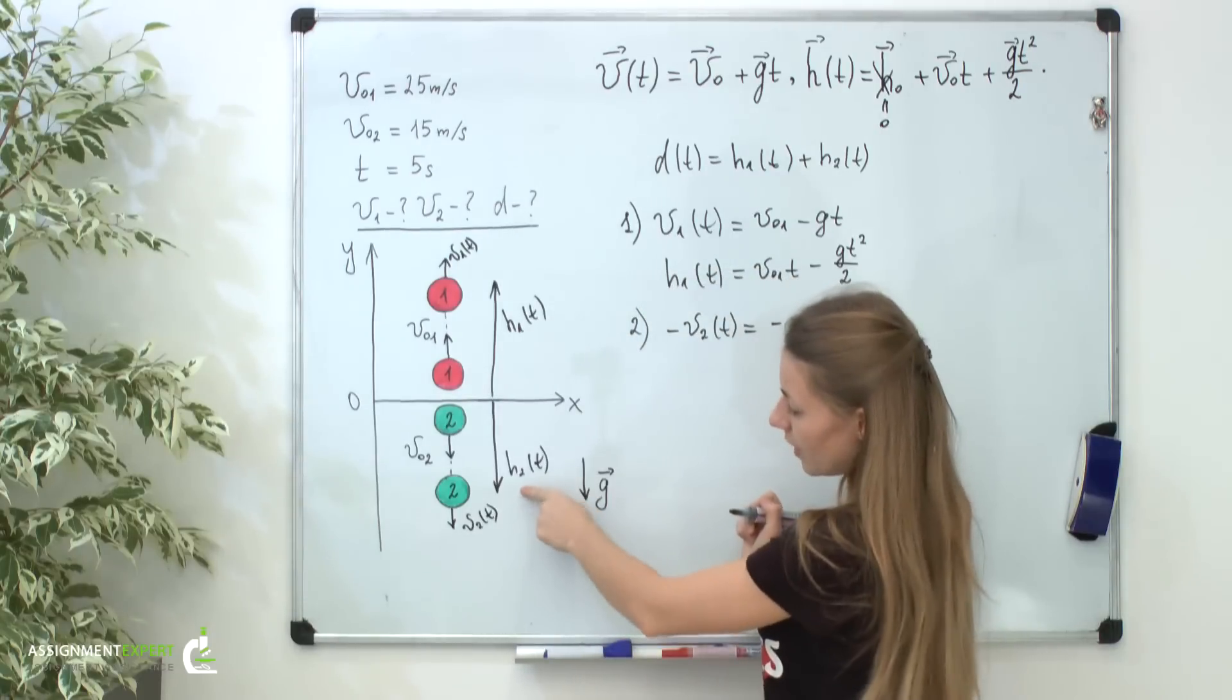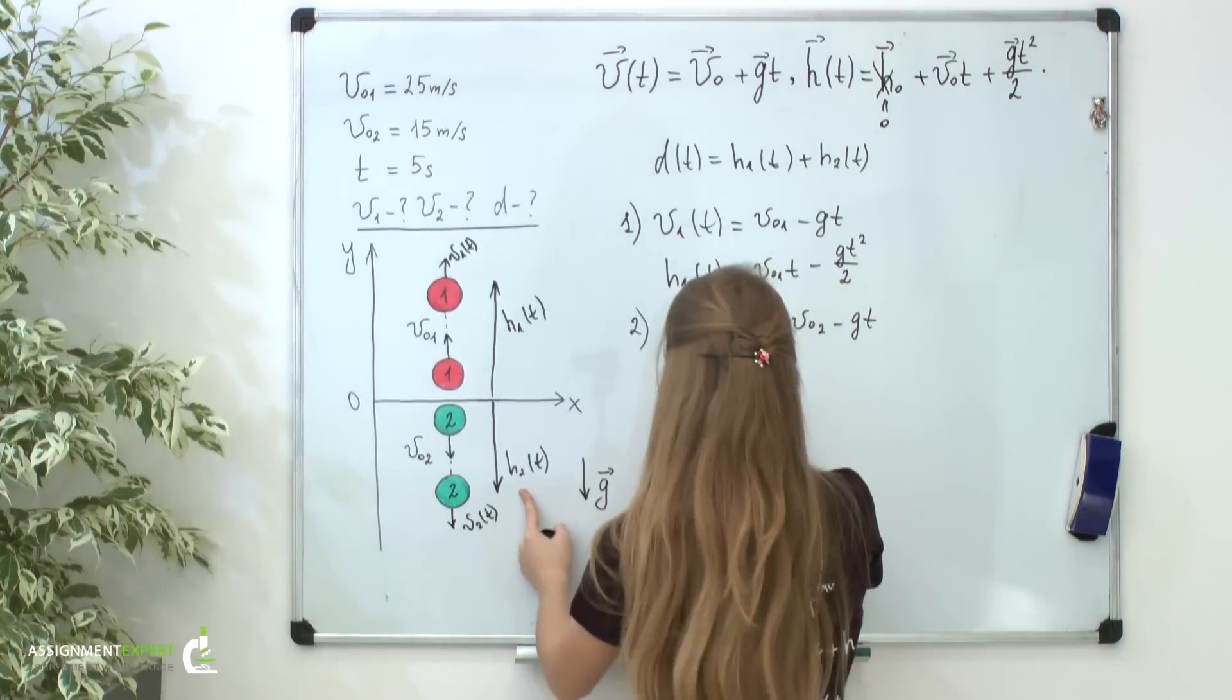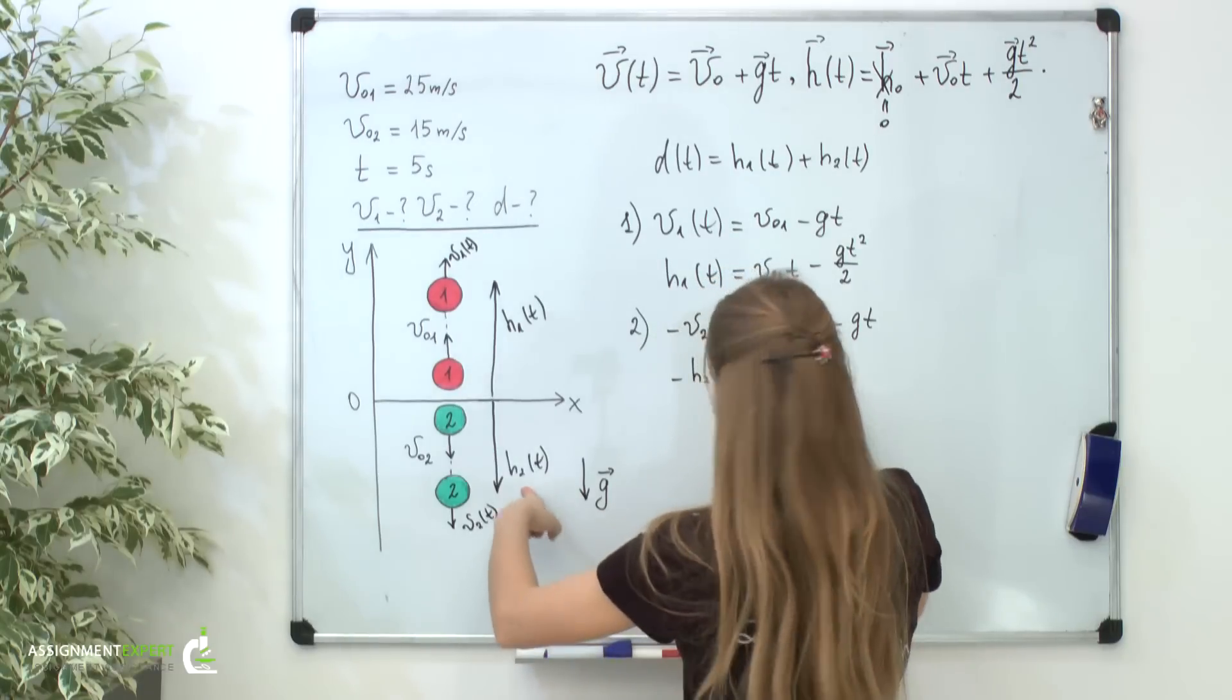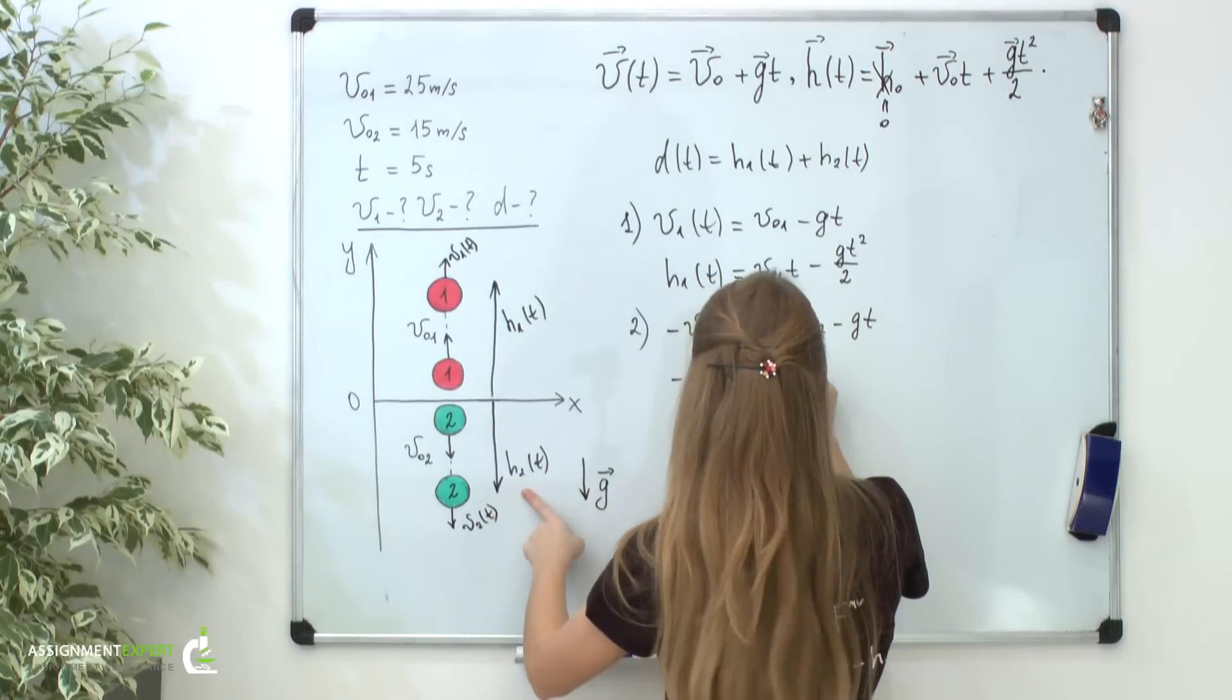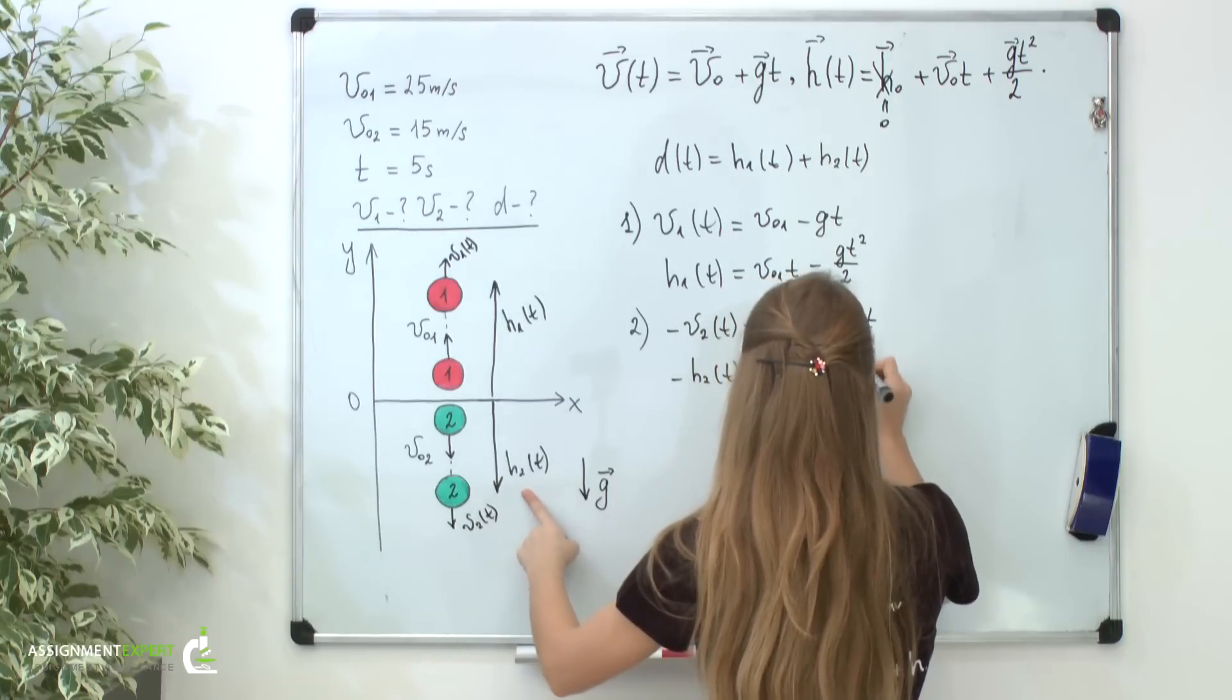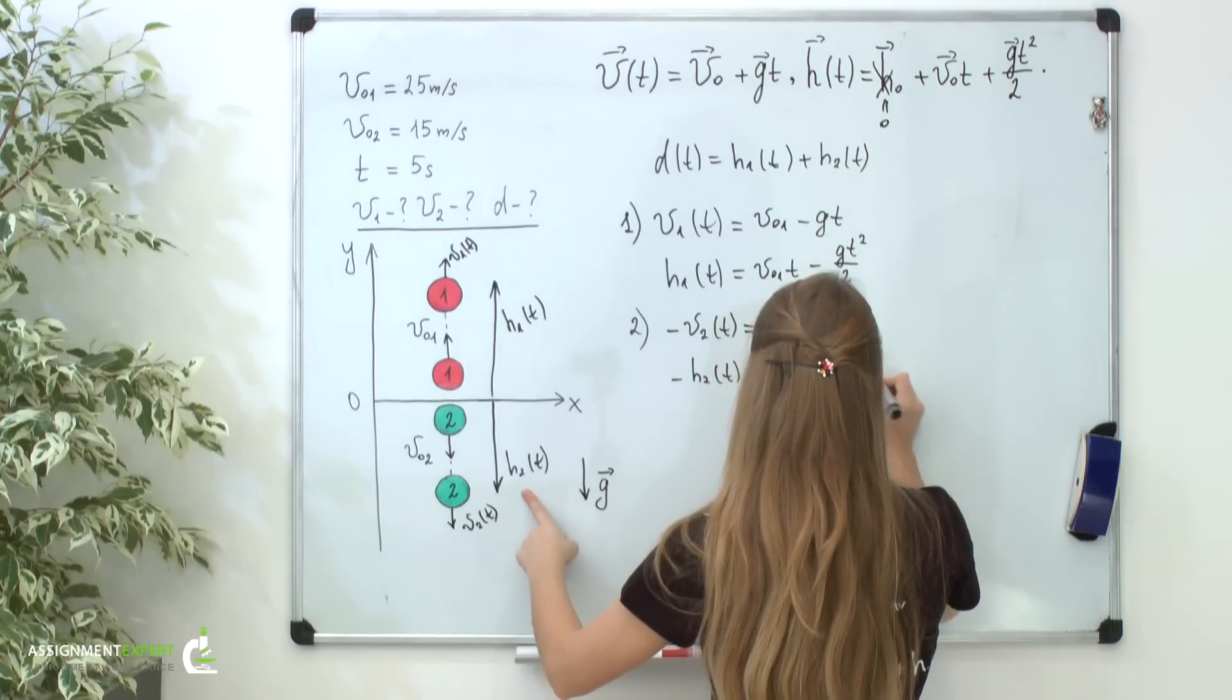Similarly, h2 of t is negative, so negative h2 of t equals negative v02t minus gt squared divided by 2.